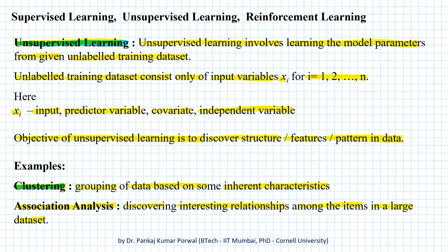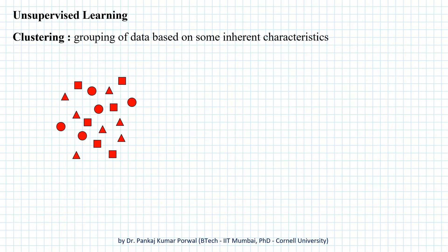Looking at the clustering example in more detail: say we have a data set consisting of some objects and we want to cluster them. Depending on how many clusters we want to form, different inherent characteristics will play an important role in deciding the clustering. For example, if we want to group this data set into two clusters, the model will have to learn parameters based on inherent characteristics so that the entire data set is partitioned into two clusters.